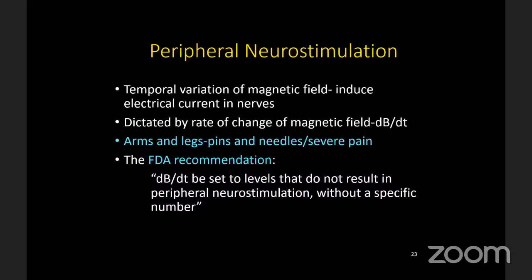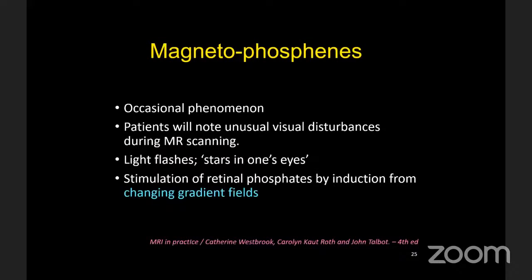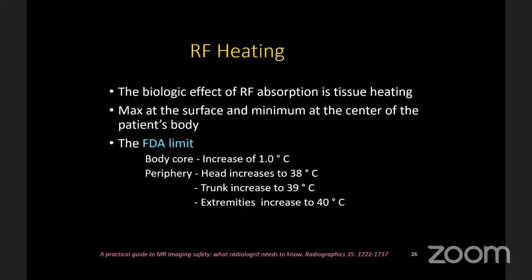In peripheral neural stimulation effects, patients can experience tingling or severe pain in the arms and legs. The FDA recommends that gradient strength be set to levels that do not result in peripheral neural stimulation. This is a greater risk for sequences involving high bandwidth rates and rapid gradient switching. Magnetophosphenes are a related phenomenon where the patient notes unusual visual disturbances during MR scanning — stars or light flashes in one eye — resulting from induction by changing gradient fields. Radiofrequency heating is a biological effect of radiofrequency absorption, maximum at the surface and minimum at the center of the body. The FDA has defined limits: body core increase of 1°C, with the head not exceeding 38°C, trunk 39°C, and extremities 40°C.